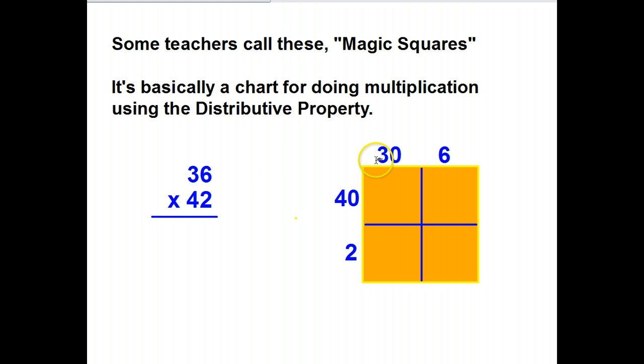What's 36? Three tens and six ones. What's 42? Four tens and two ones.